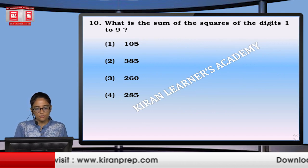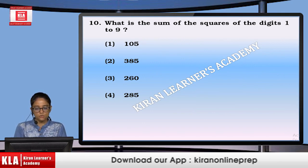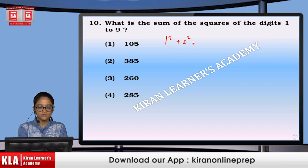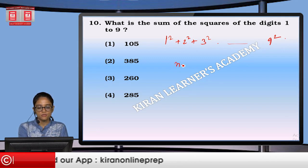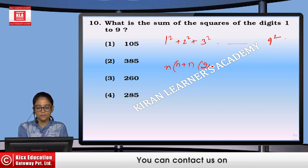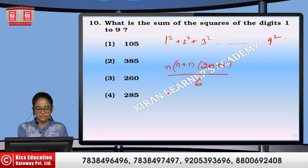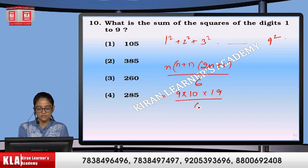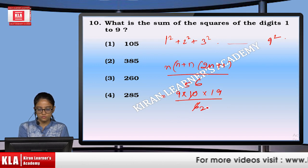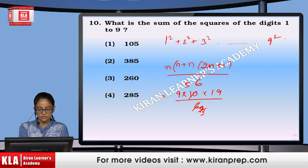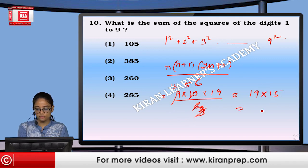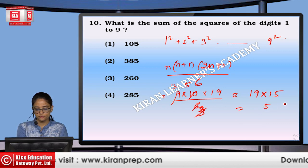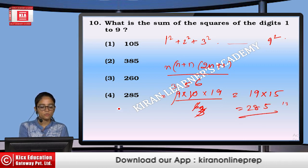What is the sum of squares of digits 1 to 9? That means 1² + 2² + 3² up to 9². Using the formula n(n+1)(2n+1)/6, this equals 9 × 10 × 19 over 6, which simplifies to 19 × 15, giving 285. The option is 4th.